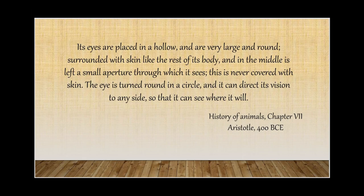Its eyes are placed in a hollow, and are very large and round. Surrounded with skin like the rest of its body, and in the middle is left a small aperture through which it sees. This is never covered with skin. The eye is turned round in a circle, and it can direct its vision to any side, so that it can see where it will. History of Animals, Aristotle, 400 BCE.